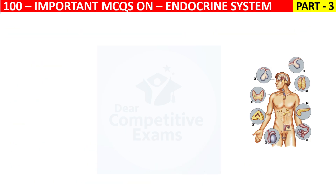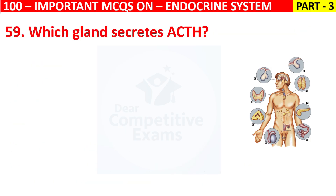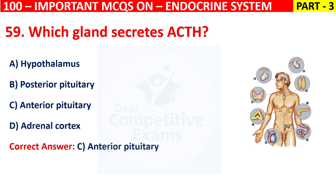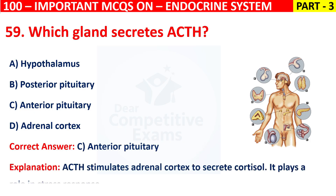Question 59: Which gland secretes ACTH hormone? Your options are Hypothalamus, Posterior pituitary, Anterior pituitary, or Adrenal cortex. The correct answer is C, that is Anterior pituitary. ACTH hormone stimulates the adrenal cortex to secrete cortisol. It plays a role in stress responses.